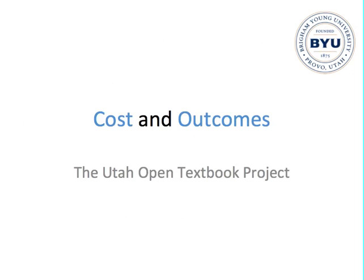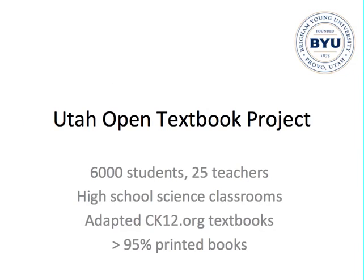I want to give some examples of research we've recently completed in the context of this COUP Framework — first, looking at costs and outcomes in the context of the Utah Open Textbook Project. The Utah Open Textbook Project has been going on for three years, touching about 6,000 students and 25 teachers. It works in high school science classrooms in schools and districts around Brigham Young University. We start with textbooks from CK12.org, the provider of openly licensed math and science high school textbooks, and bring those to professional development activities over the summer with teachers, talking about OER and how they can customize those textbooks for their own classrooms.